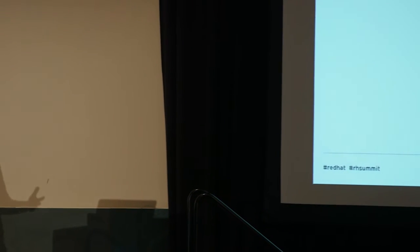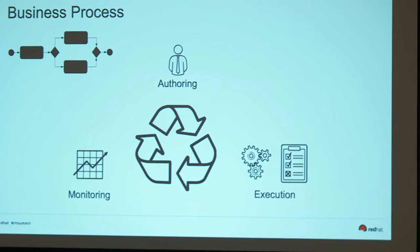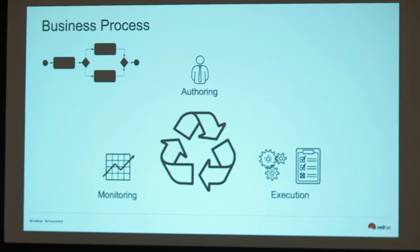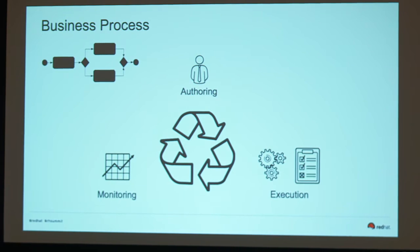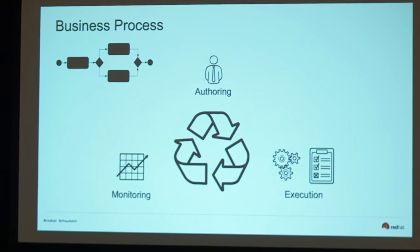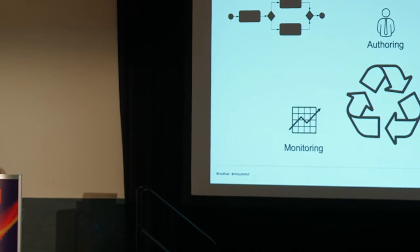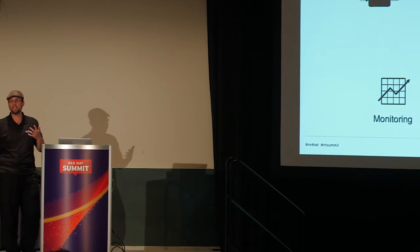Quick intro to JBPM. Basically, Business Central and BPM Suite give you all the features you need to build a business-driven application. You can create your business process — that's the authoring side. But alongside the authoring, we also provide in Business Central the execution environment, so you can run your process from within Business Central, monitor this execution, and have an interactive process. This is the idea of business automation — once you get the definitions, you can measure and see how you can improve.